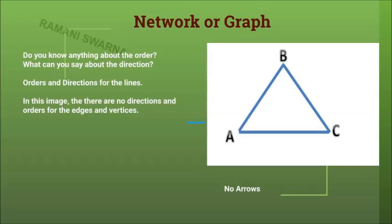In this image, you will see that there are no directions and no orders for the edges and the vertices. Now that is very clearly we can observe it. So the thing is that there are no arrows in this. That's what you will have to understand.